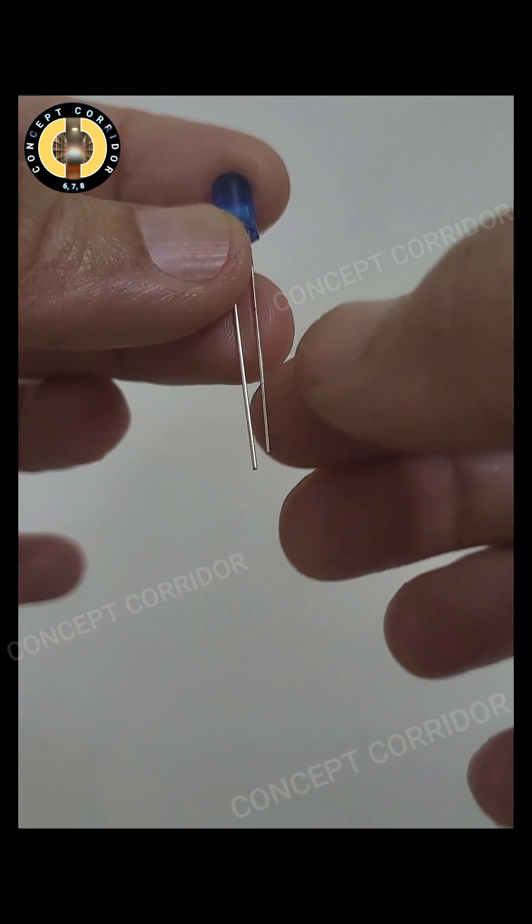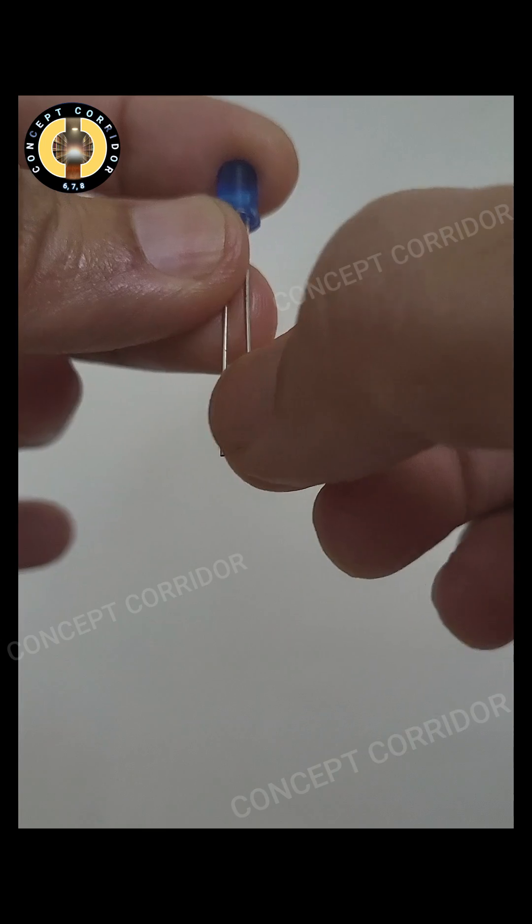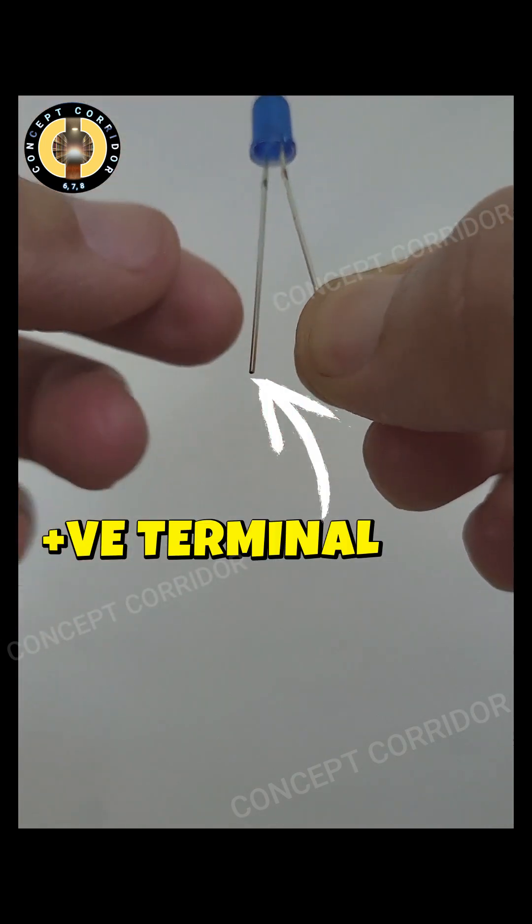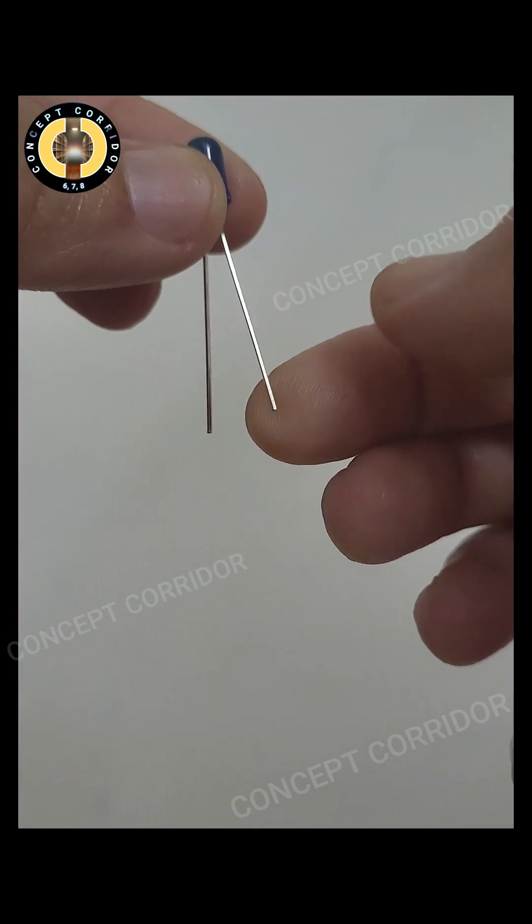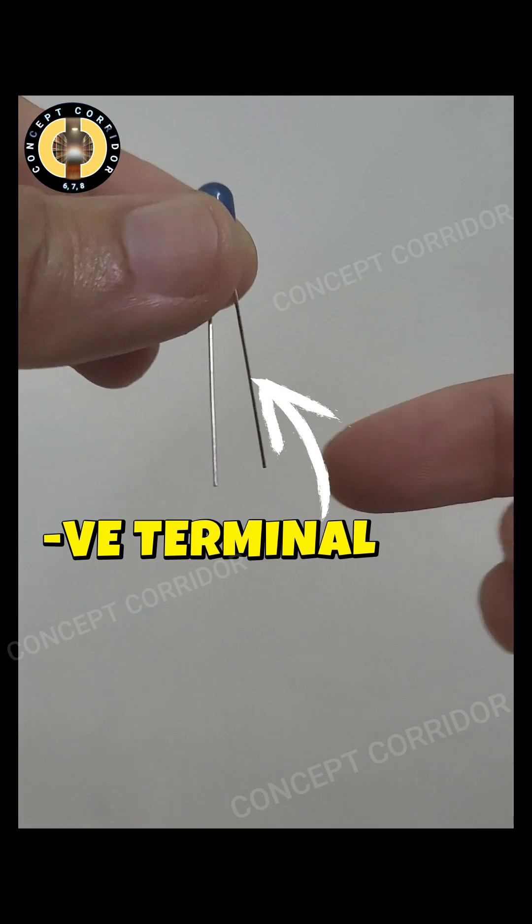Now, coming to the structure of an LED. LED has two thin wires. The longer wire, this one, is the positive terminal and the shorter wire is the negative terminal.